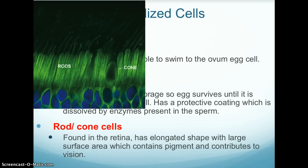Rods and cones: rod and cone cells are found in the retina, which is in your eye. They have an elongated shape with a large surface area, which contains pigments and contributes to vision.